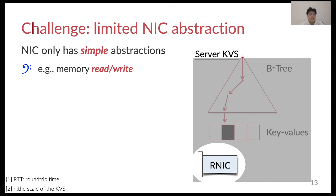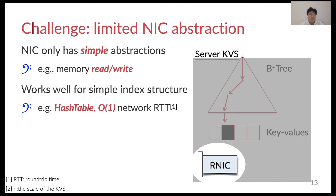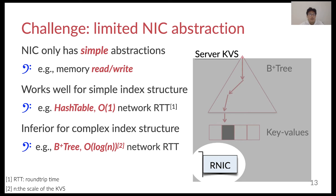However, the challenge of using the one-sided RDMA approach in a client-direct design is that one-sided RDMA only provides limited primitives. For example, it only provides simple memory read and write. As a result, we can only efficiently use one-sided RDMA read to traverse simple data structures such as a hash table. However, for complex data structures like B-tree, multiple round-trip terms are required for a single key-value request.